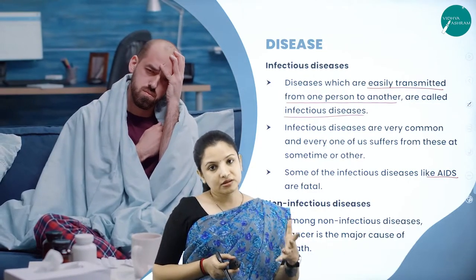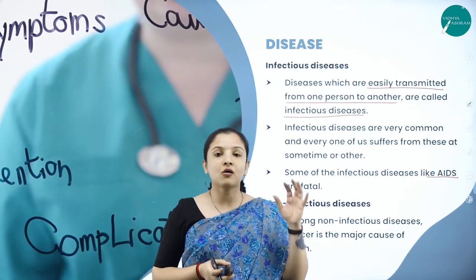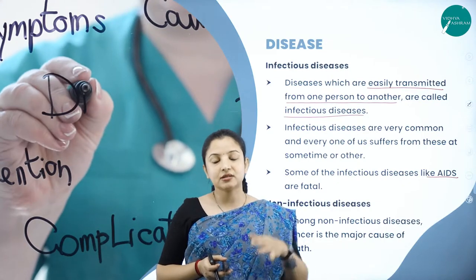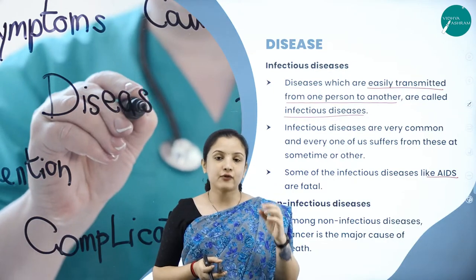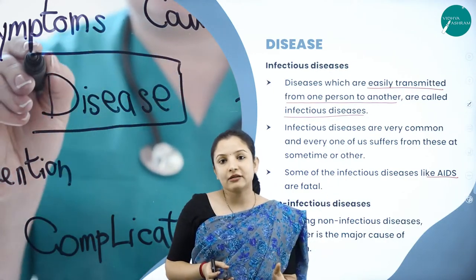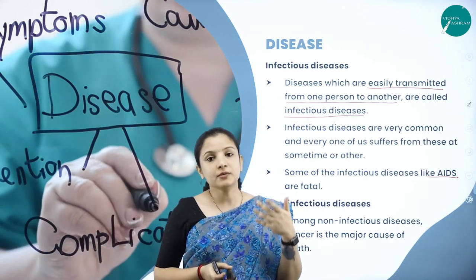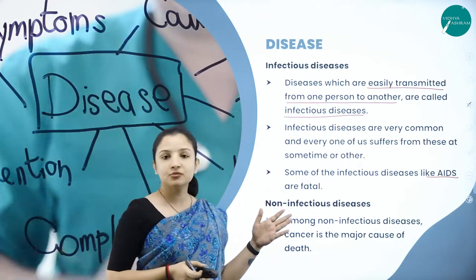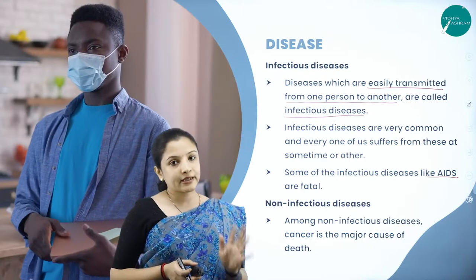If a person acquires AIDS, it means he is inviting all other diseases, because what happens in AIDS is the person's immunity completely comes down. When he does not have enough immunity, any small infection will not be tolerated, leading to a major effect on his health. That is why AIDS is very fatal — it is a disease that eventually leads to death.